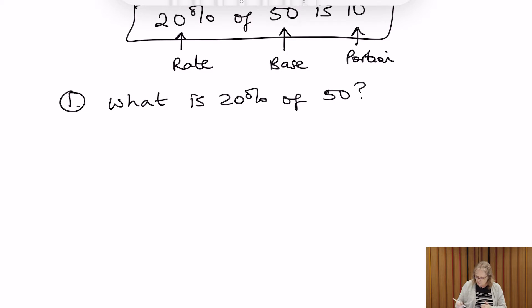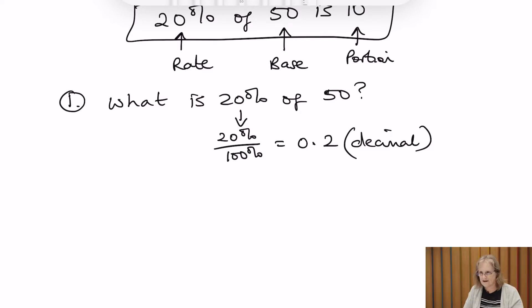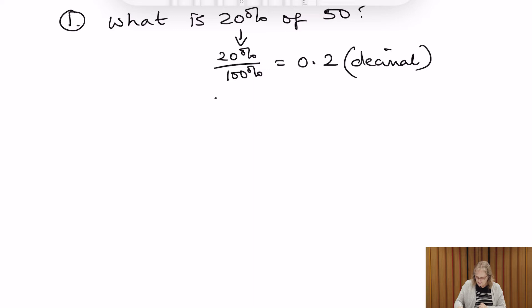A quick method we can use is to change any percentages into decimals. We do that by dividing the percent by 100. Using the calculator, 20 divided by 100 gives us 0.2 as a decimal. This is the value we need for any percentage so we can use it in our calculation. So 20% is 0.2, and 'of' often means multiplying — 0.2 multiplied by 50 gives us 10.